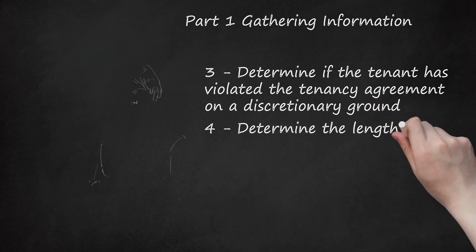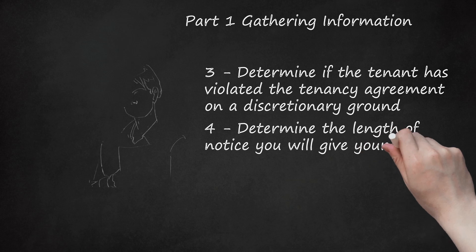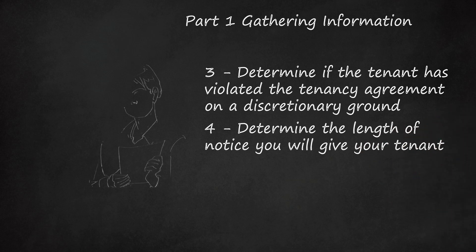Determine the length of notice you will give your tenant. The amount of time a tenant has to vacate the premises after receiving a Section 8 notice varies based on the specific violations of the lease agreement, but ranges between 2 weeks and 2 months. For Grounds 1, 2, 5, 6, 7, 9, and 16, you must give at least 2 months notice.